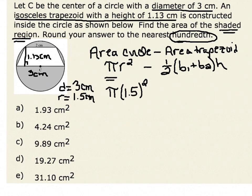Now let's look at the area of the trapezoid. The area of the trapezoid is one-half times the sum of the bases. Base 1 is 3 centimeters and base 2 is 2 centimeters, times the height, which is 1.13 centimeters.